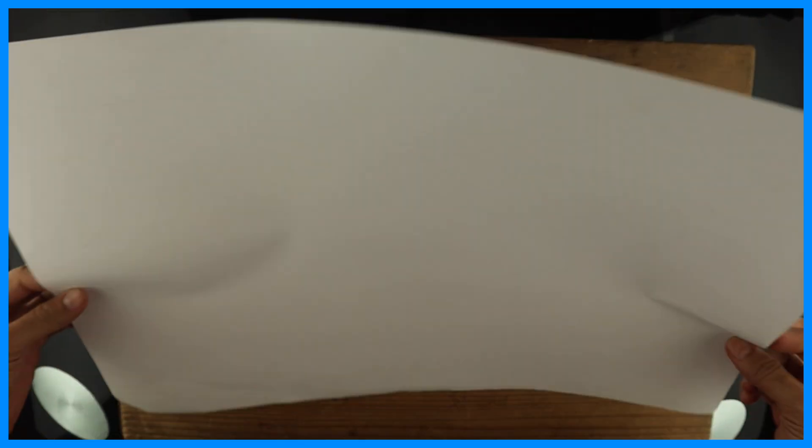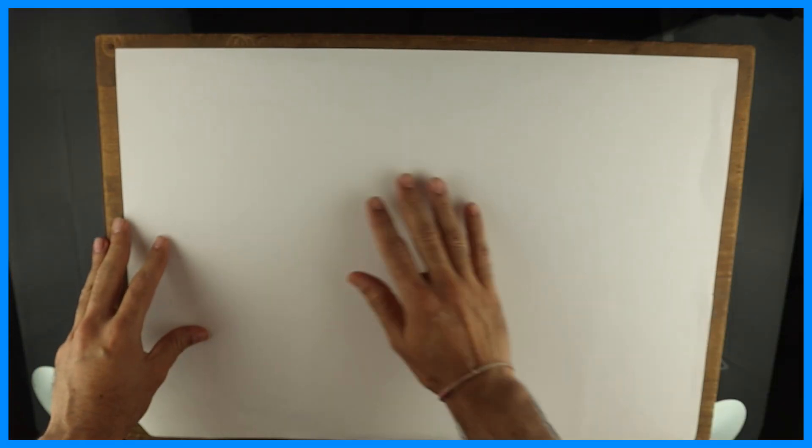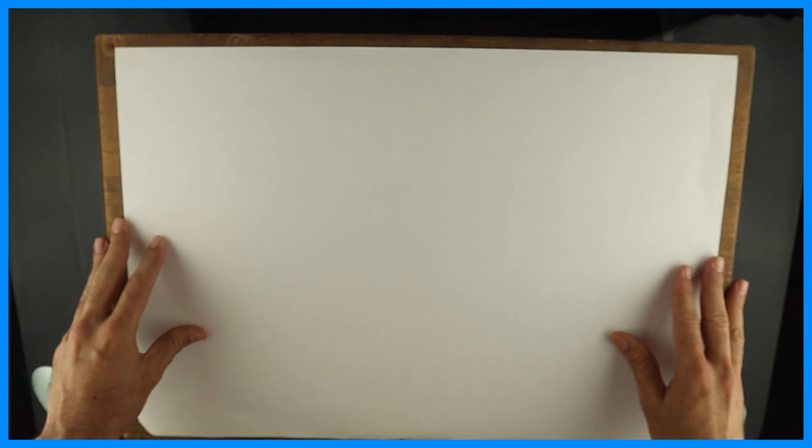Then we require drawing paper. It is called half imperial drawing sheet. See, it will be like this. This is an old one but you will get plain white or off white color.